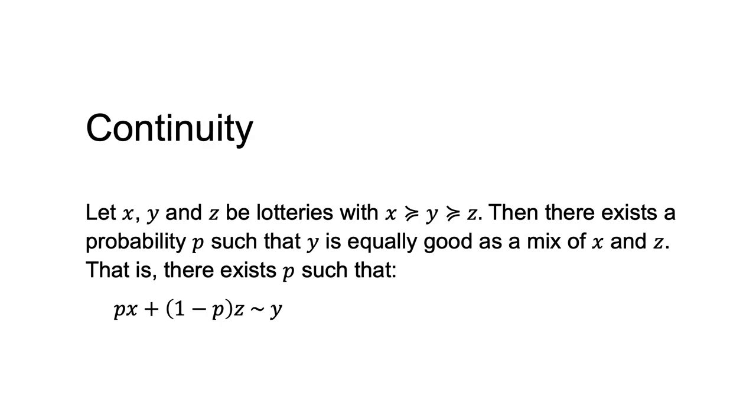If x, y and z are lotteries, with x weakly preferred to y and y weakly preferred to z, the continuity axiom requires that there exists a probability p, such that y is equally as good as a mix of x and z.